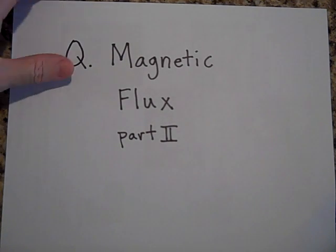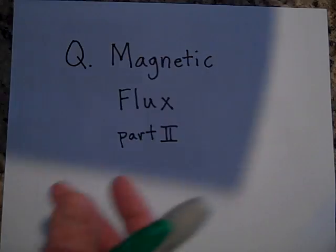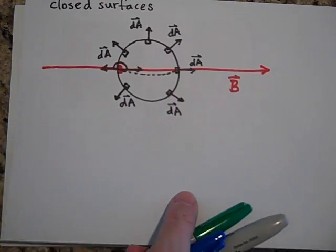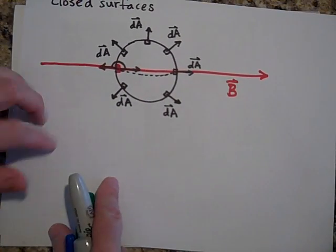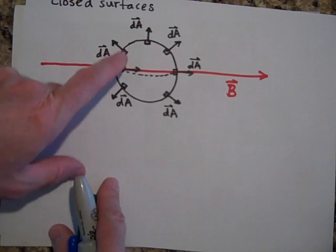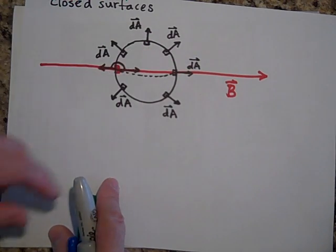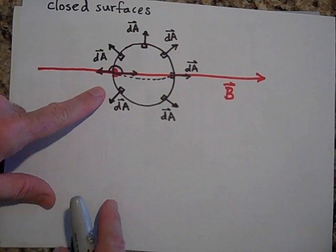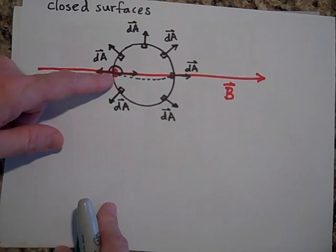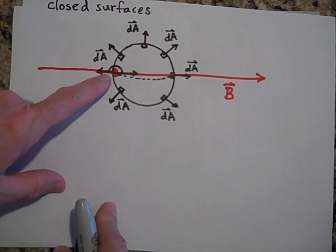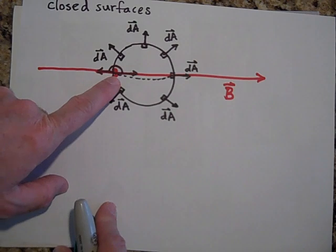Okay, this is magnetic flux part two. I was making the point here with this closed surface that when you have closed surfaces, the DAs always go normally out of the surface or perpendicularly out of the surface. So if you have a line coming in like this, then the flux going through this part, this little DA here, is negative.